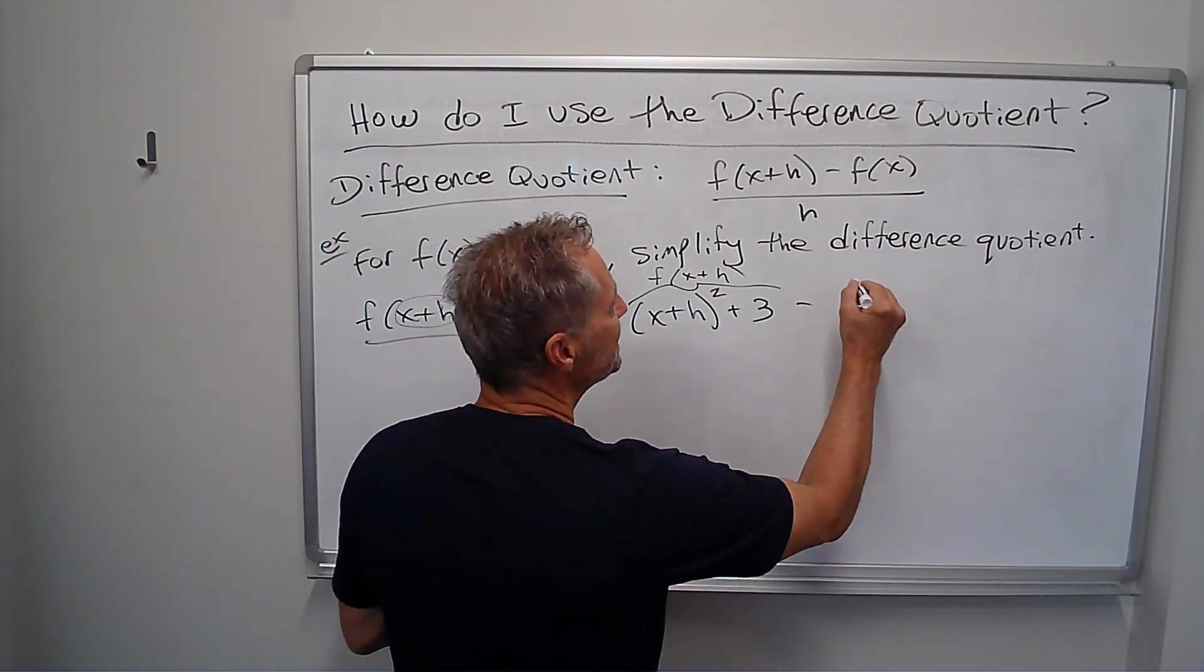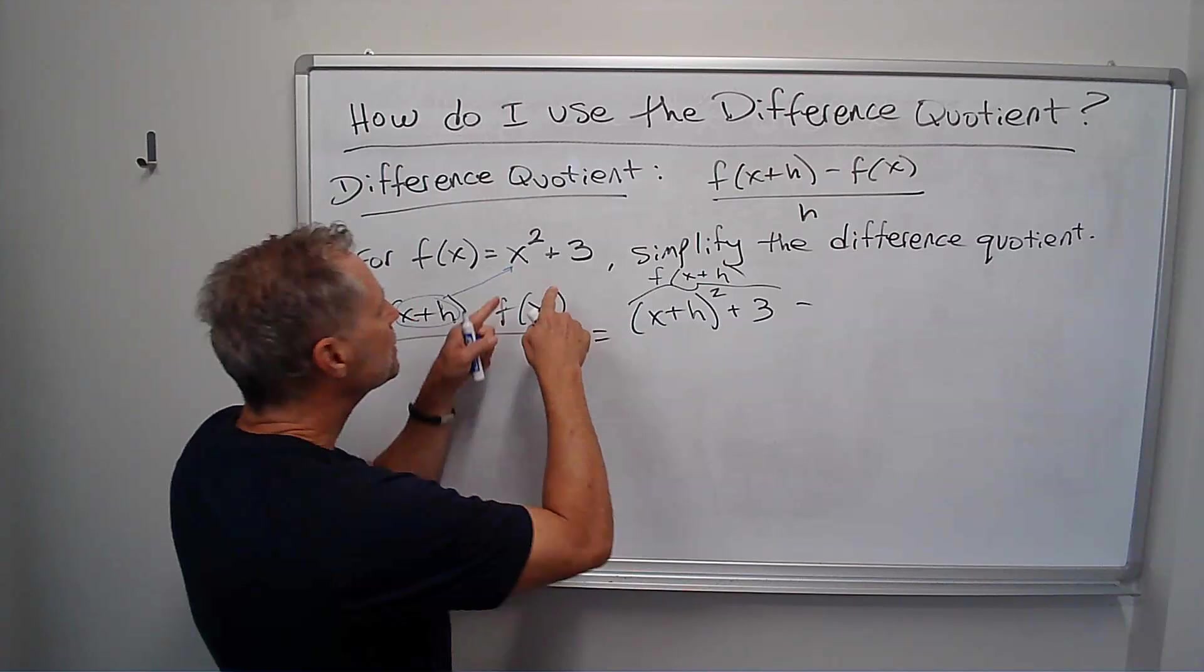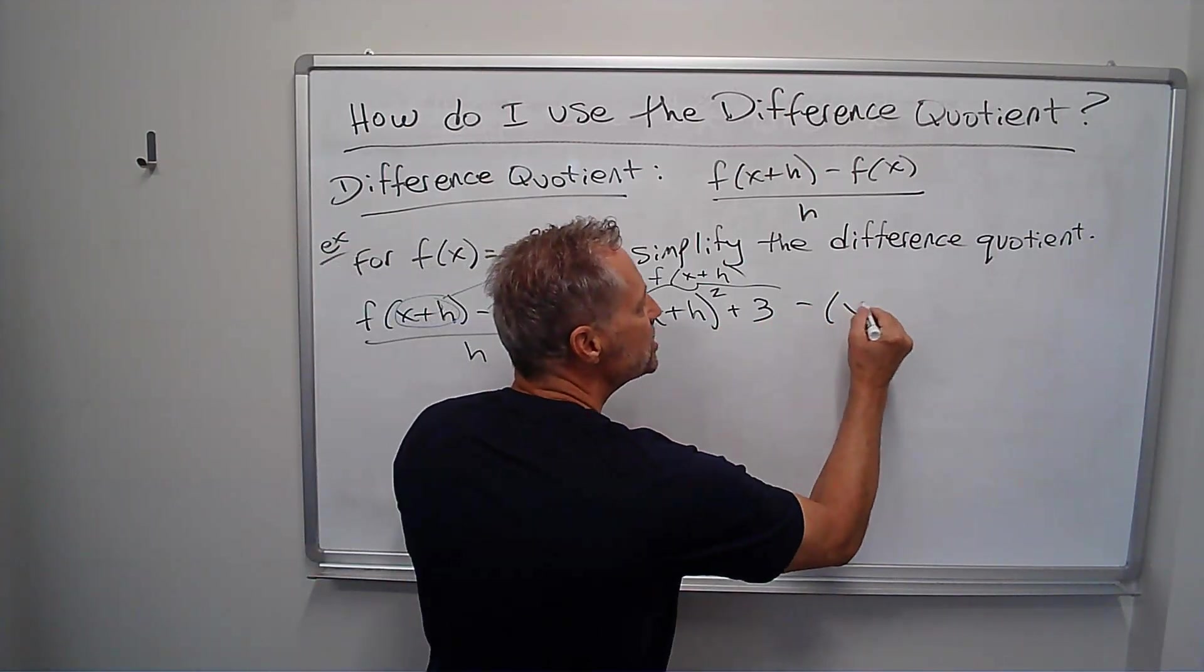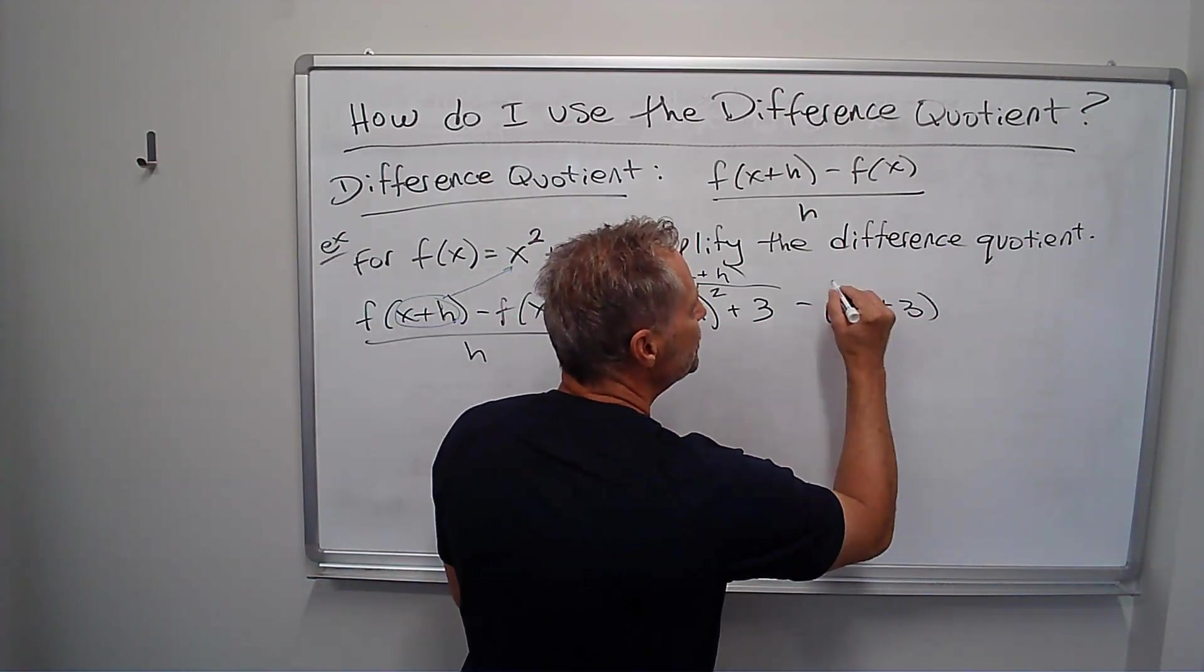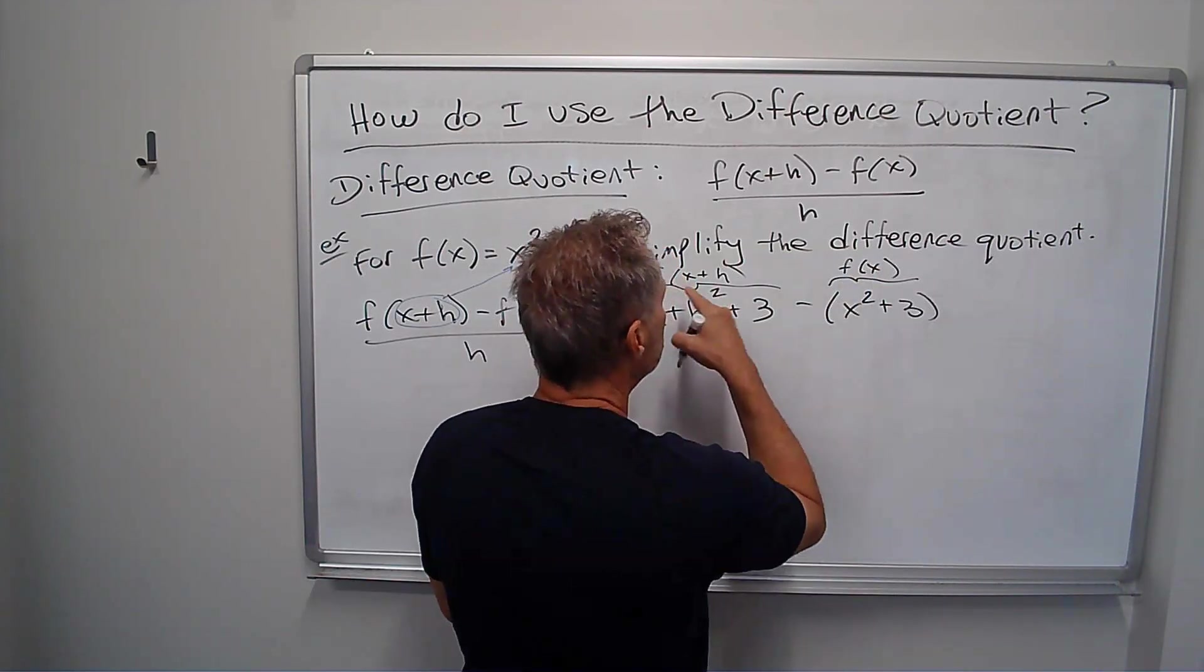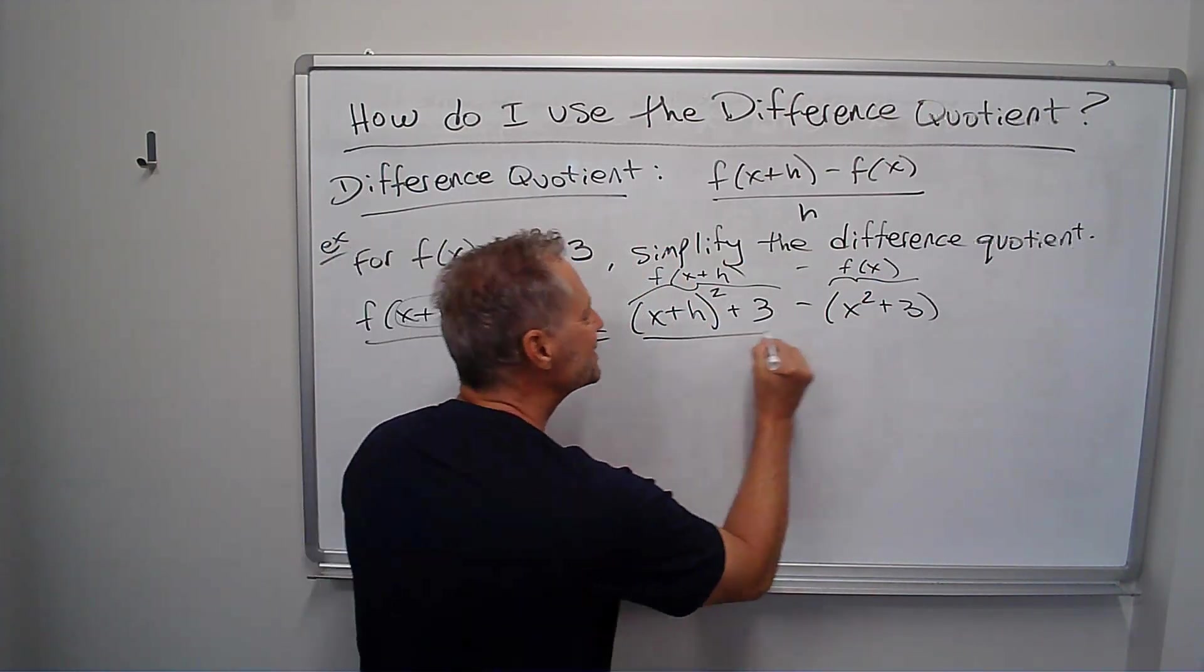Minus f of x, well, that's just minus the original function, x squared plus 3. Make sure you put that in parentheses. Okay, f of x plus h minus f of x. Then it's all over h.